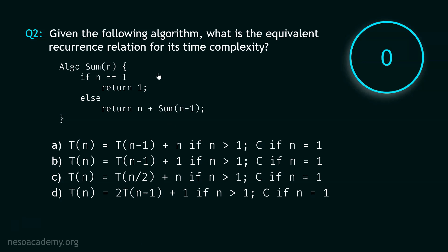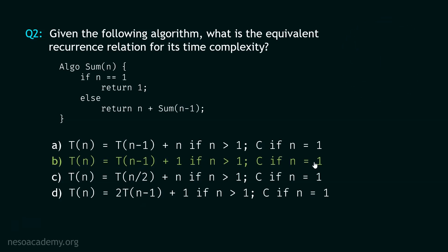Stop. In this question, we have been told to find the recurrence relation of time complexity of this specific algorithm. The algorithm has a base case and a recursive case. If T(n) is the time required to solve sum of n, then T(n-1) is the time required to solve sum of n-1, and here we are performing one addition operation. That is why option B is the correct option: T(n) = T(n-1) + 1, if n is greater than 1.